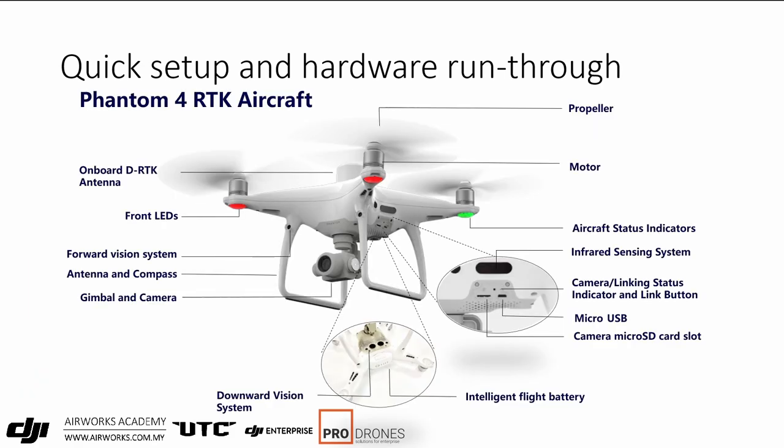Looking at the aircraft, it looks very similar to the Phantom 4 Pro — same props, light, battery position, sensors and imaging. But if you look at the top, you'll see the onboard DRTK antenna. That's one of the key differences.